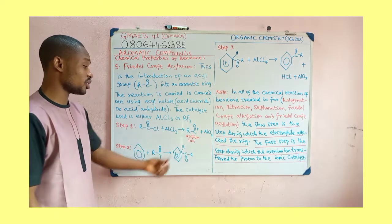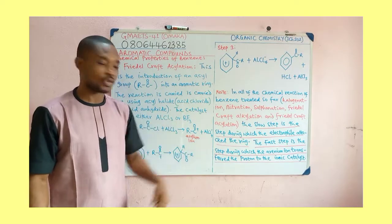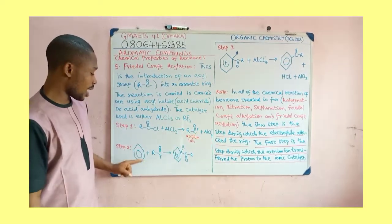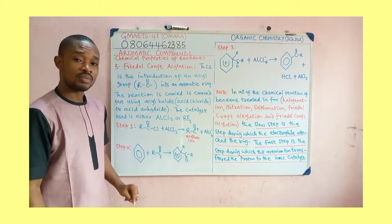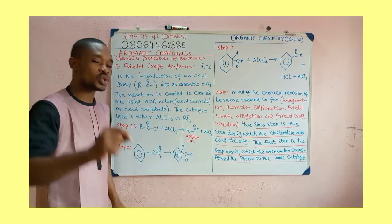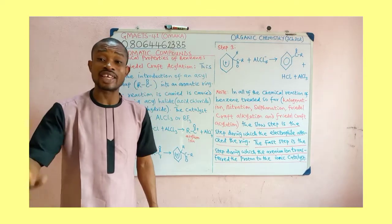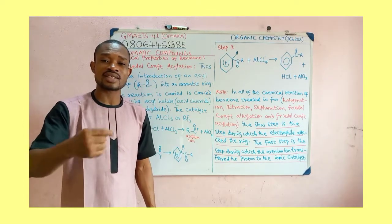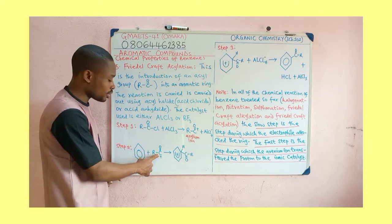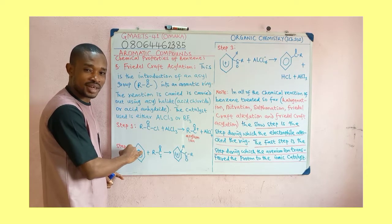In the second stage, this acylium ion, which is the electrophile — you can see the positive charge here — will attack the benzene ring, breaking a bond. It is important to note that both in Friedel-Craft alkylation and Friedel-Craft acylation, the carbon of the functional group is the carbon that will attach to the carbon of the benzene ring.